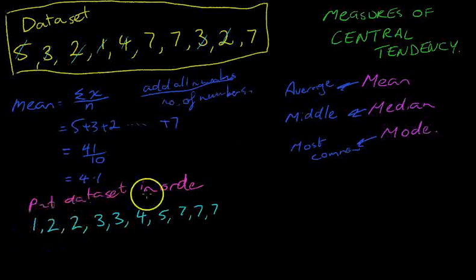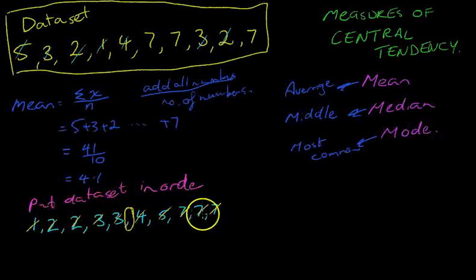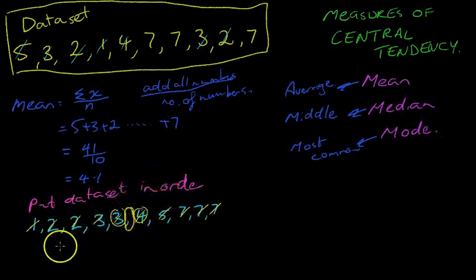Now the easiest way to do that is just to count from left and right until you get to the middle. Now we've got a problem because the middle number, because there's an even number of numbers, the middle number is here. It's the 5.5th number. Now when you've got this, if that number and that number are the same, it's not a problem, that'll be the median. But the way to figure this out is to take these two numbers, add them together and divide them by 2. So the median here in this particular case is equal to 3 plus 4 divided by 2. That's 7 divided by 2, which is 3.5.